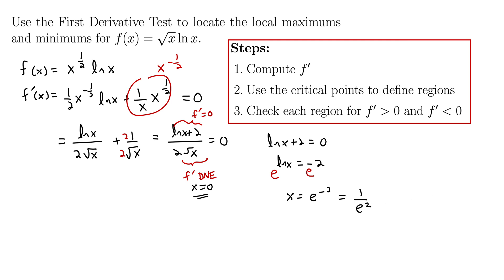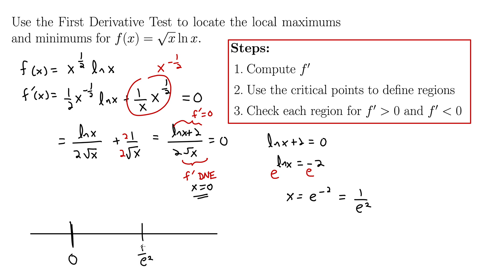On to step 3. We are now checking each region, defined by these critical points, to determine if the derivative is positive or negative in those regions. That will correspond to where the function is increasing and decreasing, and then we can use that information in the first derivative test to spot our local maxes and mins. Let's set up our sign chart. We have two critical numbers: x = 0 and x = 1/e². Anything to the left of x = 0 is not even in our domain, so we ignore that region.